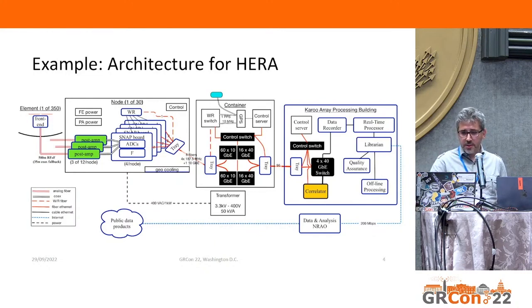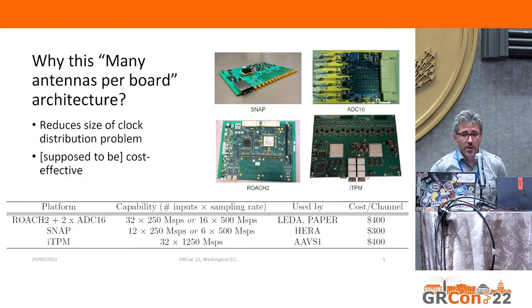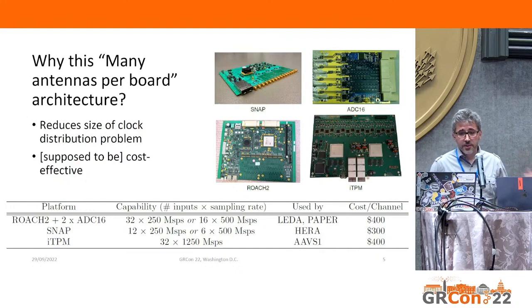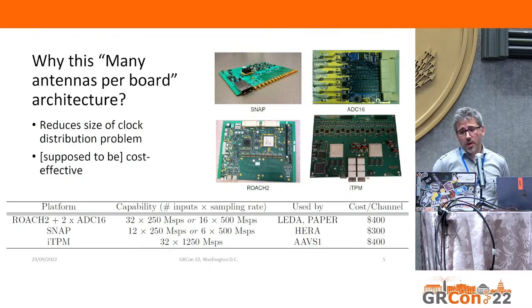As you can see, there are lots of blocks in this system and lots of places where data is funneled to the next container. Why have we opted for this many-antennas-per-board architecture? The obvious reason is that it reduces clock distribution — you can share resources, getting three, six, or twelve antennas onto a single board, reducing cost. It's also supposed to be cost-effective. This shows the cost per channel for these platforms.